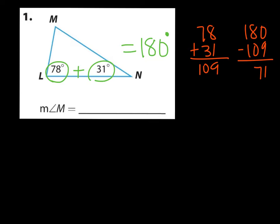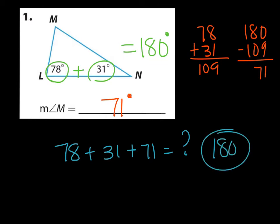So the missing measurement for angle M is 71 degrees. Now if you wanted to double check to make sure you got the right answer, we could list out these three numbers: 78 plus 31 plus 71, and when we add that together it should be 180. If it is, then we got it right.